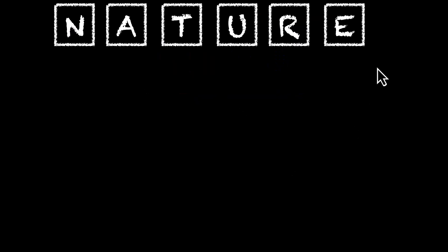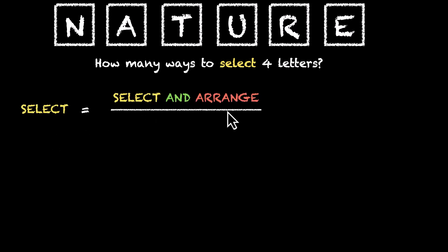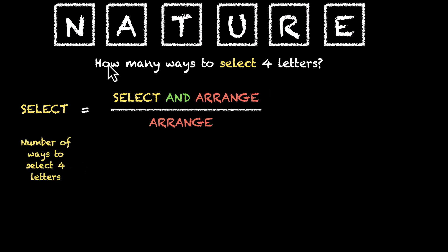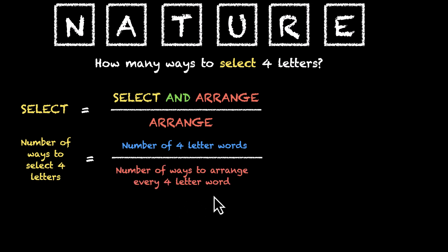N-A-T-U-R-E, Nature — this is a six-letter word. In how many ways can we select four letters out of the word NATURE? The number of ways to select equals the number of ways of selecting and arranging, divided by the number of ways of just arranging. So the number of ways of selecting four letters out of these six equals the number of four-letter words — where we select four letters and arrange them — divided by the number of ways of arranging every four-letter word.